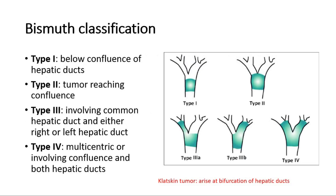This is the Bismuth classification of cholangiocarcinoma. There are four types. Type 1 is when the tumor occurs below the confluence of the hepatic ducts — the right and left hepatic duct — so it occurs below the bifurcation.